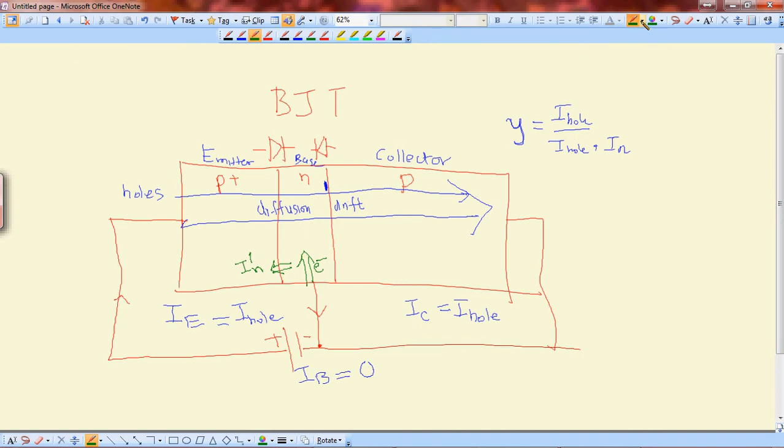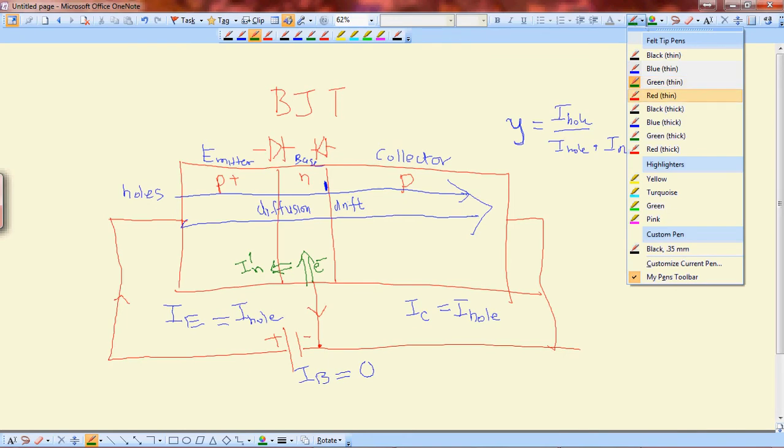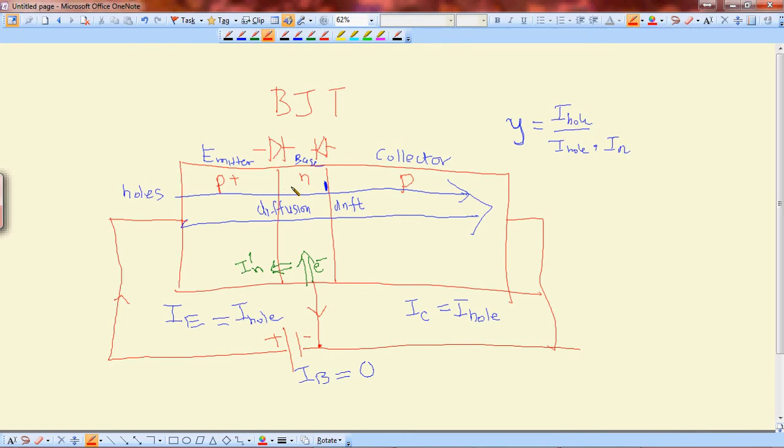And it will recombine with some of the hole here. So it's a process for recombination. Well, as you might have noticed, there can be some current that leak here. I dash dash N.